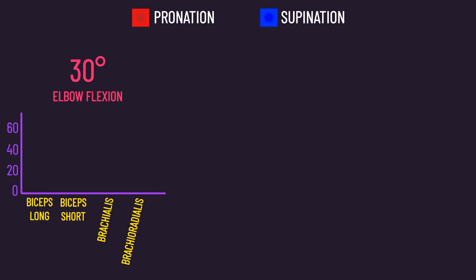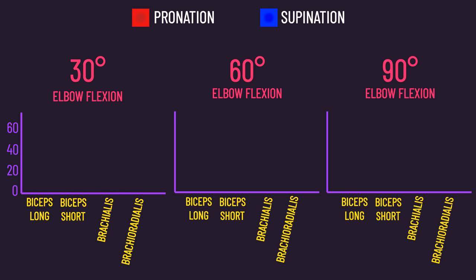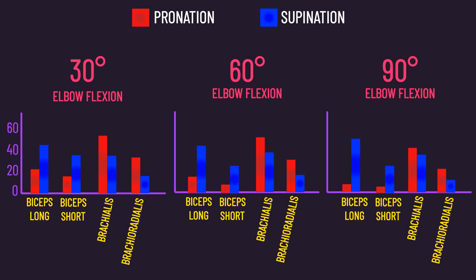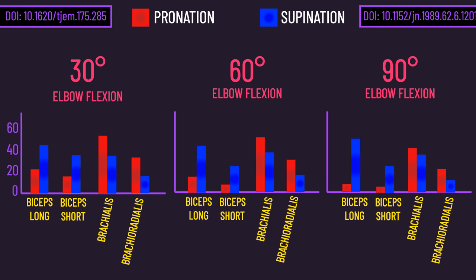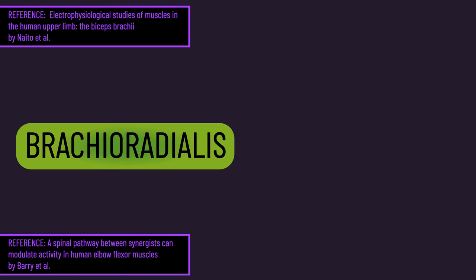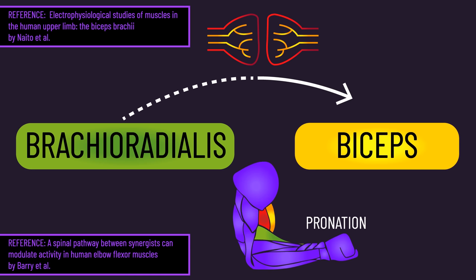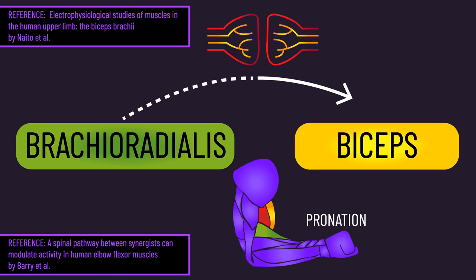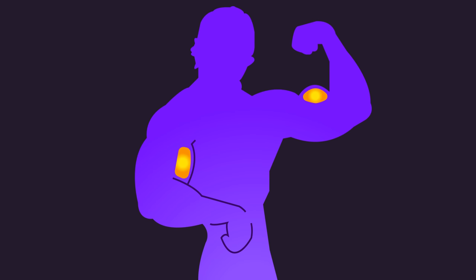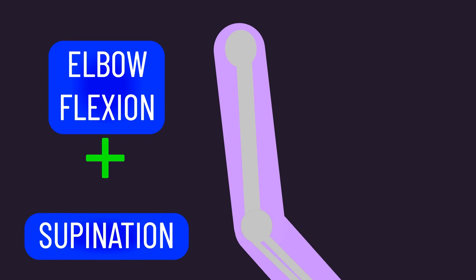At all three elbow flexion angles, biceps long and short head activity were greatest in supination and lowest in pronation, while the opposite was true for the brachialis and brachioradialis. An interesting fact is the brachioradialis appears to have nerve cells that essentially link it to the biceps, and a few papers found that during elbow flexion with a pronated grip, the brachioradialis sends signals to the biceps to reduce its activity. From this, we can infer that to optimize biceps development, we want exercises involving elbow flexion with supination of the forearm.